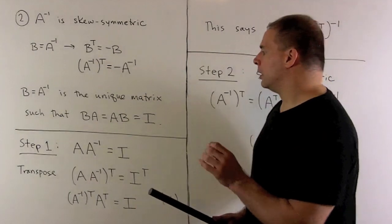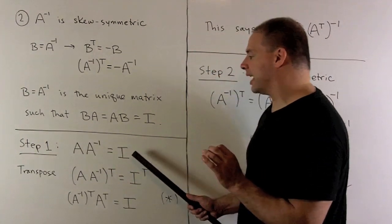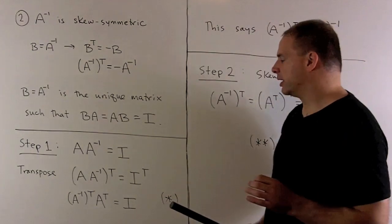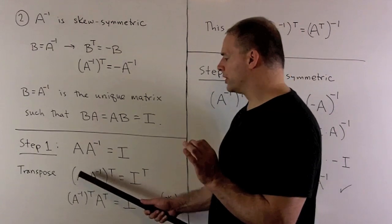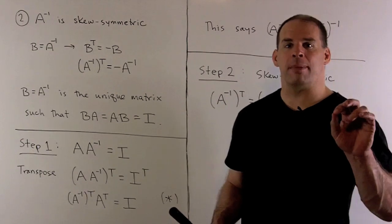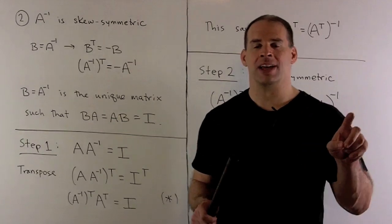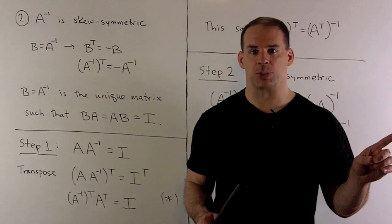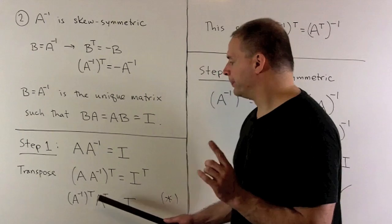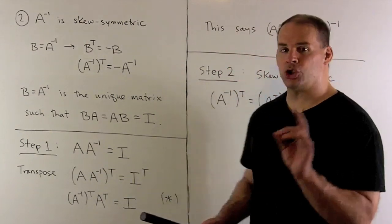Let's go through this in steps. For my first step, I have A times A inverse equals the identity by definition of inverse. I'm going to apply transpose to both sides. If I take a product of two matrices and take the transpose, it's the same as reversing the order of each transpose — so AB transpose equals B transpose times A transpose. So here we get A inverse transpose times A transpose, and that equals the identity because the identity transposes itself.